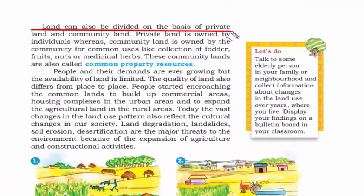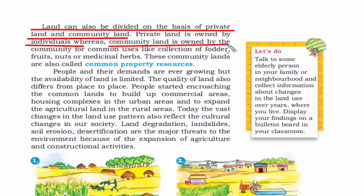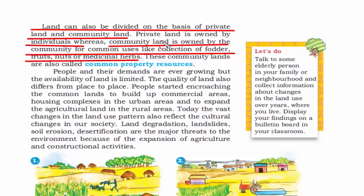Land is divided into two parts: private land and community land. Private land is that land where an individual is the owner. Community land is owned by the community for common uses like collection of fodder, fruits, nuts, and medicinal herbs. When you buy a plot to build a house, that is private land. A public park or amusement park is called a community property resource.